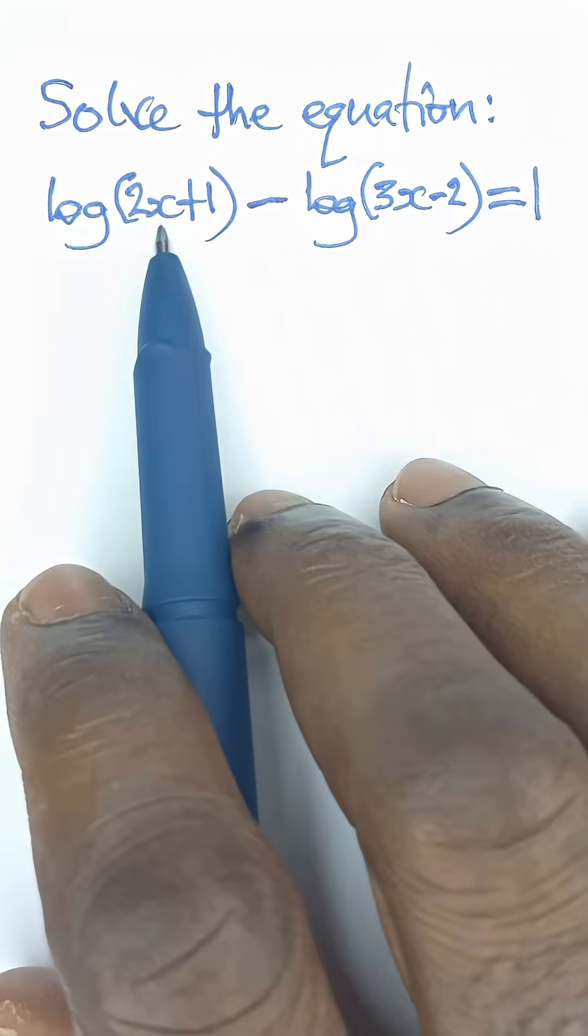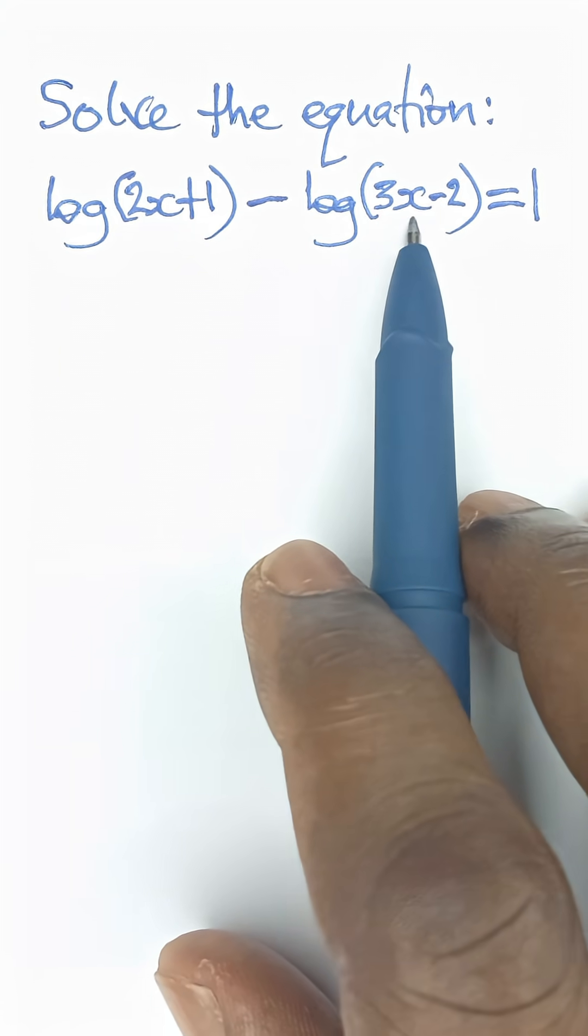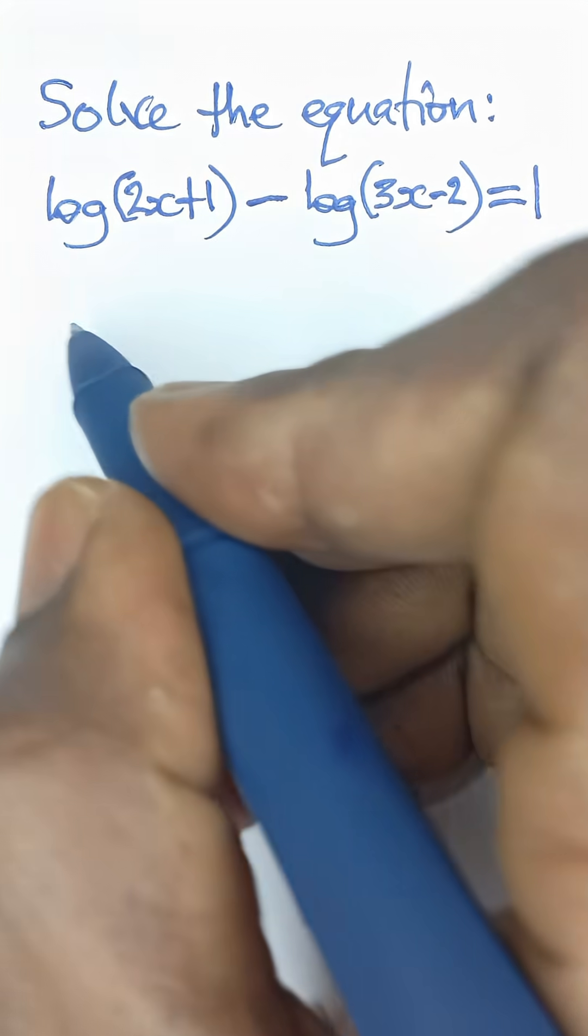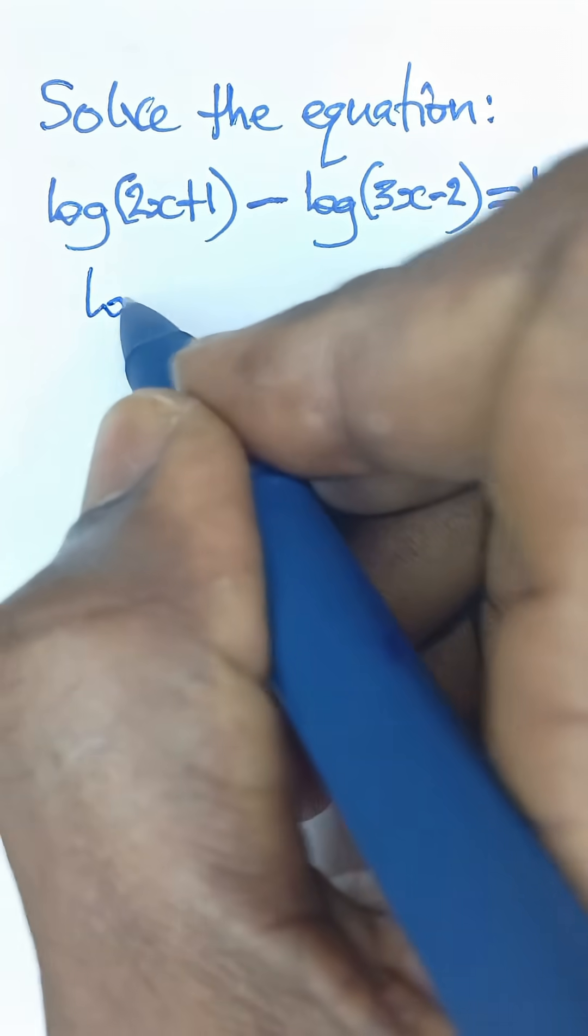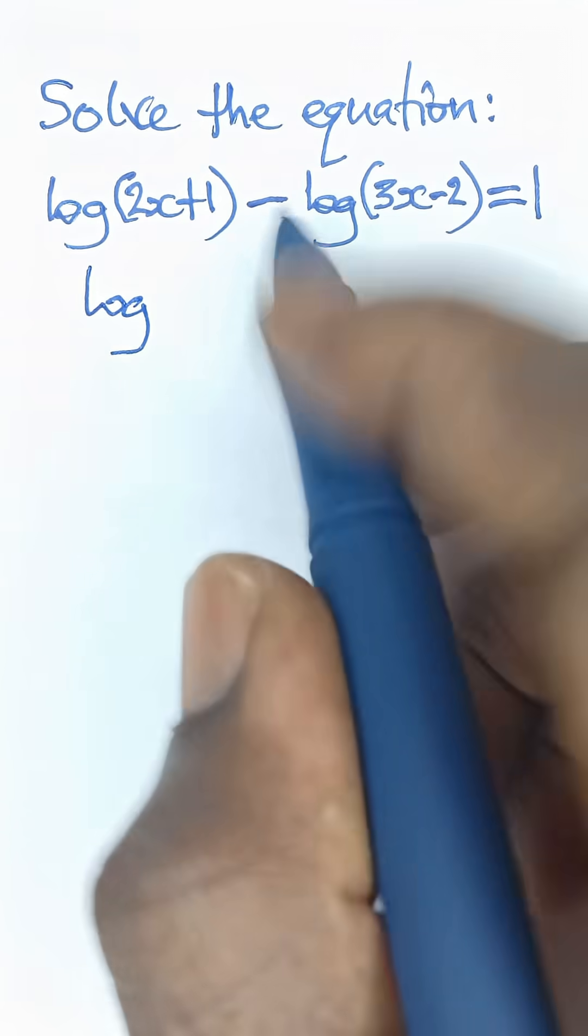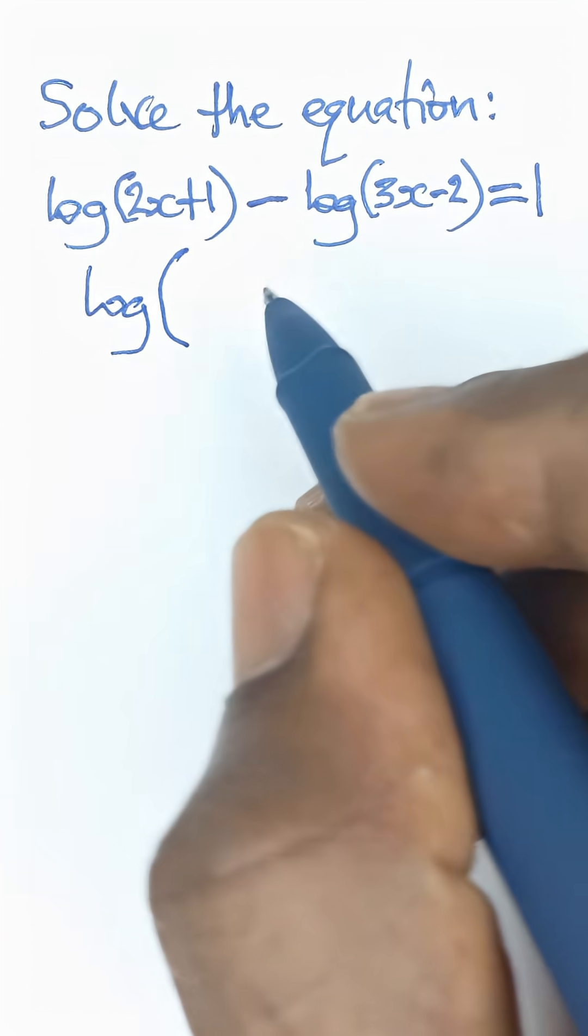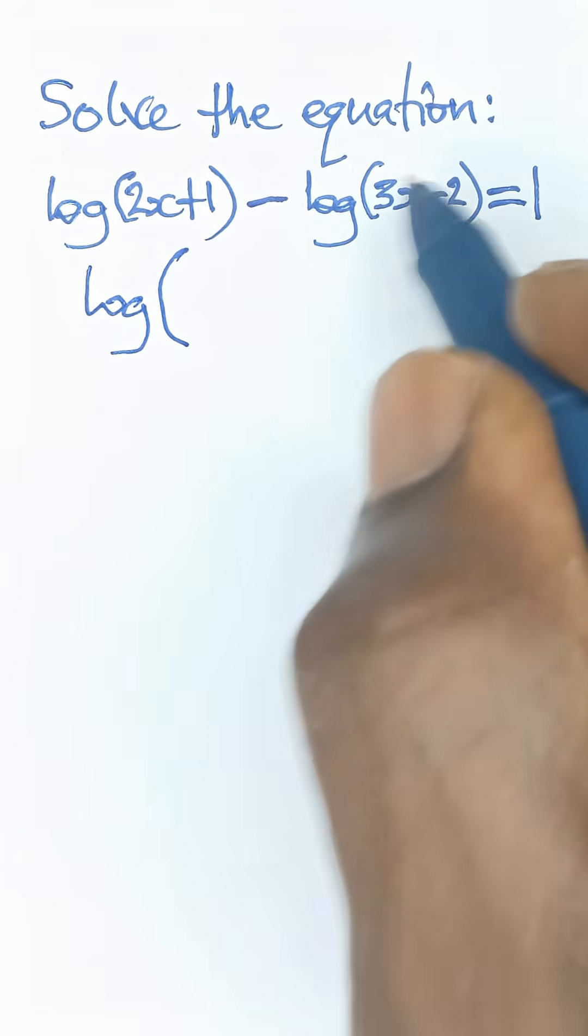Solve the equation log 2x plus 1 minus log 3x minus 2 is equal to 1. According to the theory of logarithm, once we take log like this, when you have a subtraction, you simply divide the terms there.